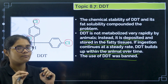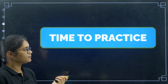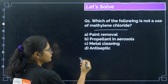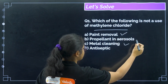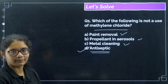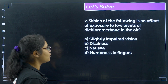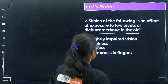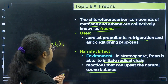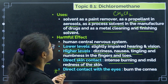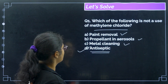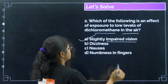That covers all six polyhalogen compounds. Let us now practice some questions. Question 1: which of the following is not a use of methylene chloride? Methylene chloride is used as a paint remover, metal cleaning agent, and propellant, but it is not used as an antiseptic — only iodoform is used as an antiseptic. Correct answer is option D. Question 2: which of the following is an effect of exposure to low levels of dichloromethane in the air? Low levels of dichloromethane cause slightly impaired vision and hearing. Correct answer is option A.